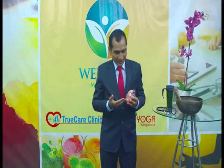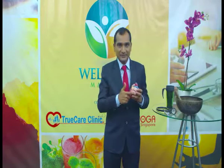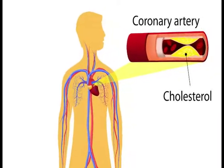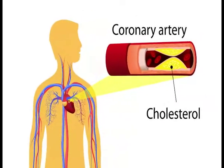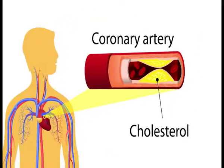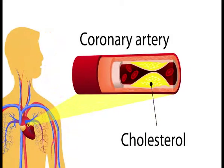The heart, simply put, is a pump supplying blood to the whole body. To put it into perspective, the heart of a healthy 70 kg adult pumps about 7,200 liters of blood daily — that's approximately 5 liters per minute. The blood is supplied to the heart by coronary arteries. Coronary artery disease, or CAD for short, is the narrowing or blockage of the coronary arteries, caused by cholesterol deposits in the vessel wall, resulting in decreased blood supply to the heart muscle.